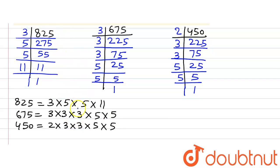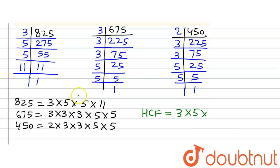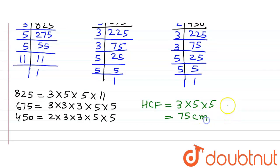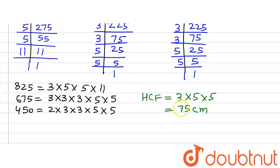Now we look at the factors common to all three numbers. 3 is common in all three numbers, and 5 appears twice in all three (5 × 5). So the HCF of these three numbers is 3 × 5 × 5 = 75. Therefore, 75 cm is the length of the longest tape that can measure the three dimensions of the room exactly.